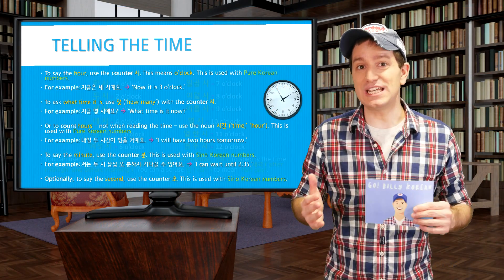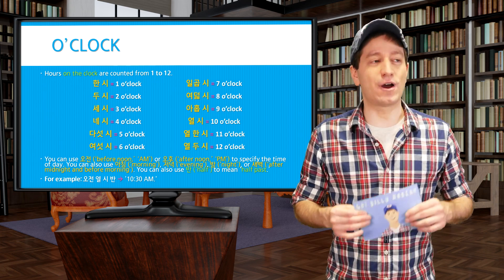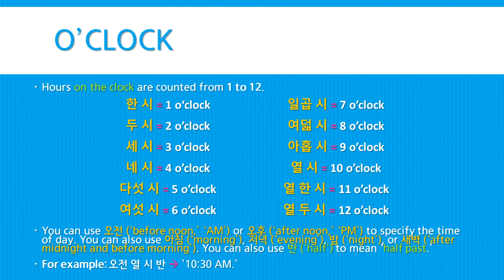The counter 시 means o'clock or what hour it is. In Korean, hours on the clock are counted from 1 to 12: 1 o'clock 한 시, 2 o'clock 두 시, 3 o'clock 세 시, 4 o'clock 네 시, 5 o'clock 다섯 시, 6 o'clock 여섯 시, 7 o'clock 일곱 시, 8 o'clock 여덟 시, 9 o'clock 아홉 시, 10 o'clock 열 시, 11 o'clock 열 한 시, 12 o'clock 열 두 시.